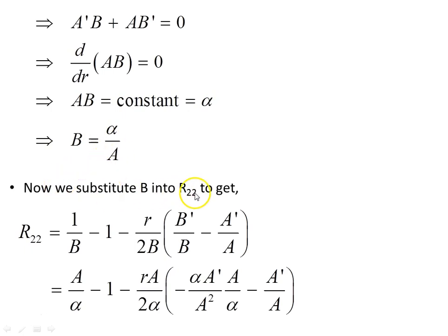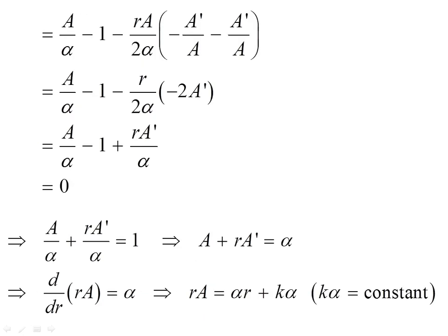Now we substitute B into R22 to get R22 as this object here, and we're going to substitute B as that into R22, and that will give us A/α. Where the B is, we've got α/A, so we get A/α here, minus 1, minus rA/(2α), and this object in here. So things will cancel out. A² and an A here will take an A out from the top of 1. This α and this α will cancel. And when we do that, we get this object here, A/α - 1, that's that object there.